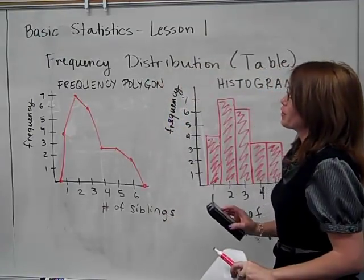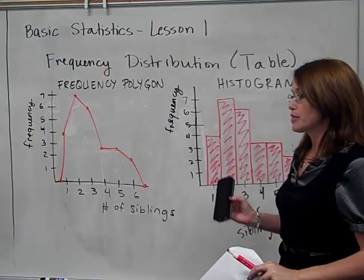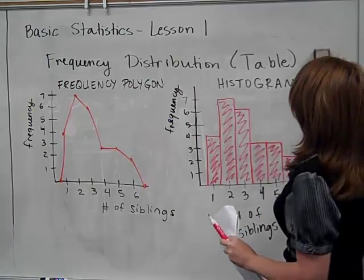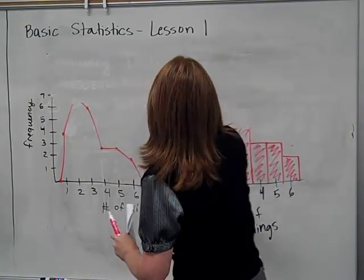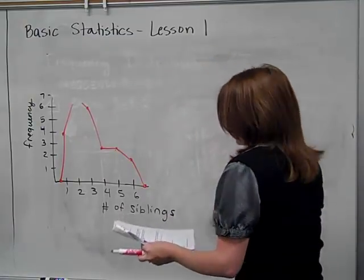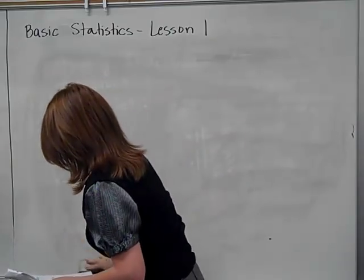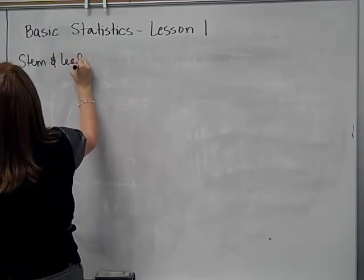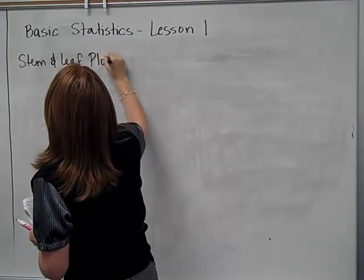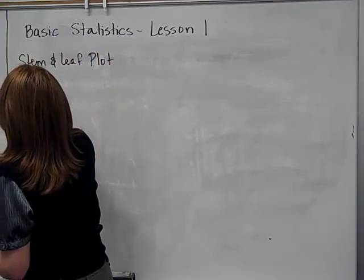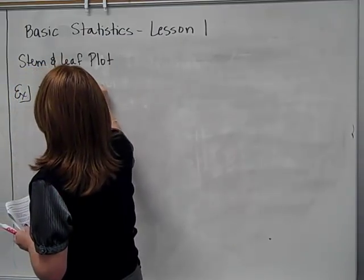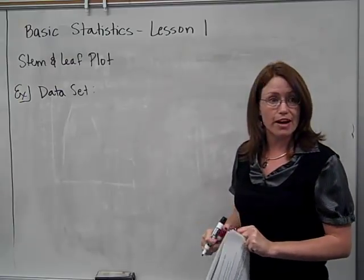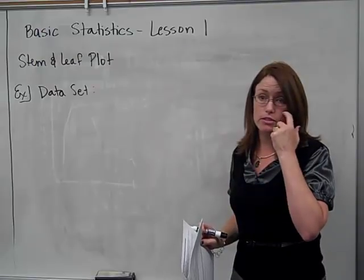Another kind of graph works very well for data sets that have numbers that involve like 25, or 32, or 68. Next kind of graph we're going to talk about is a stem and leaf plot. So let me give you a data set. And again, this data set could be anything, but the key I want you to notice is the fact that all my values will have two numbers, 25, 68, something like that. So two digits, a units and a tens.